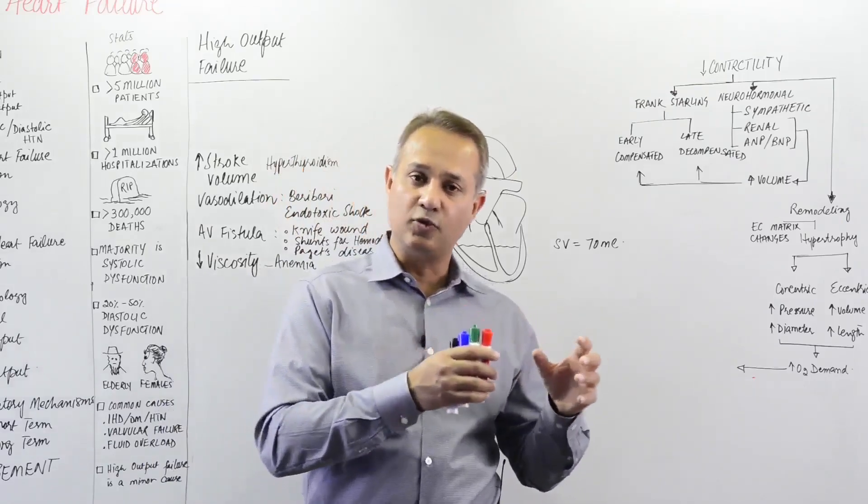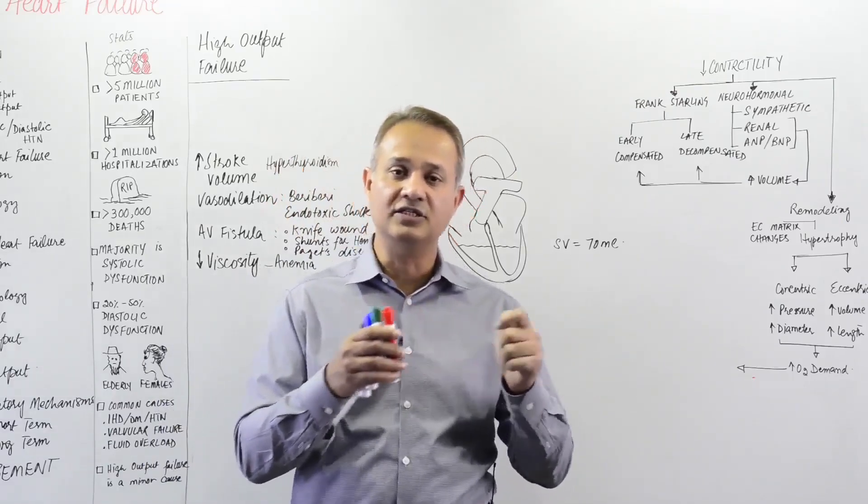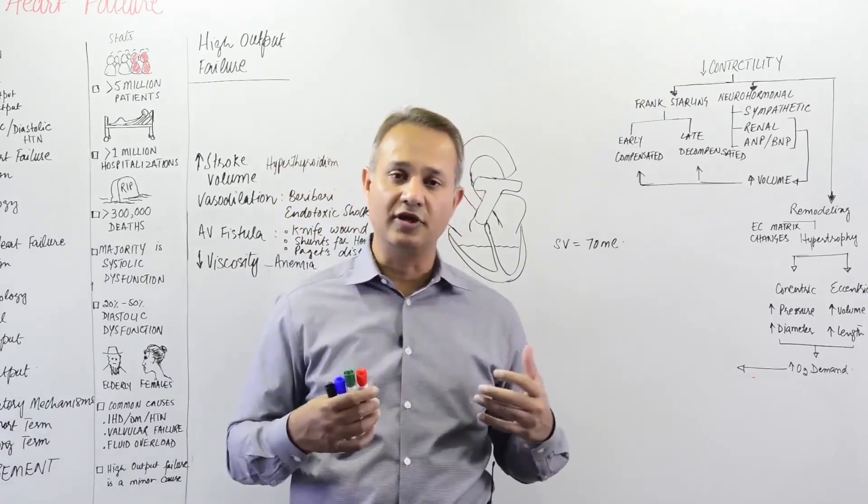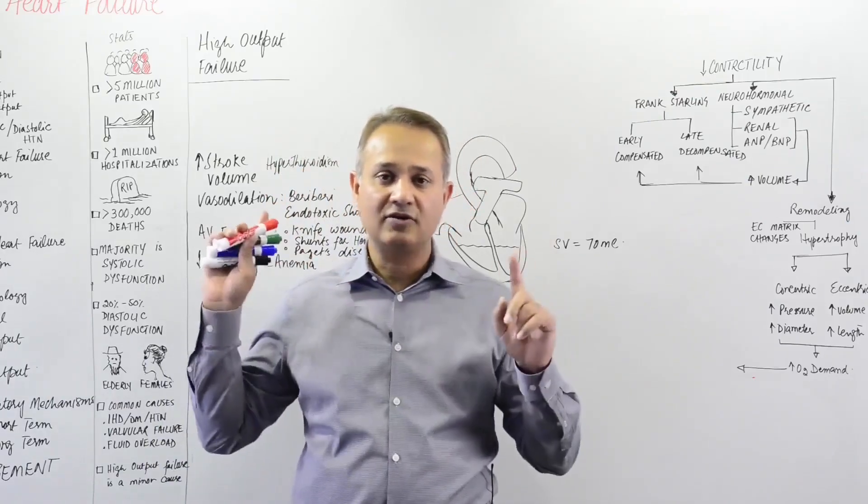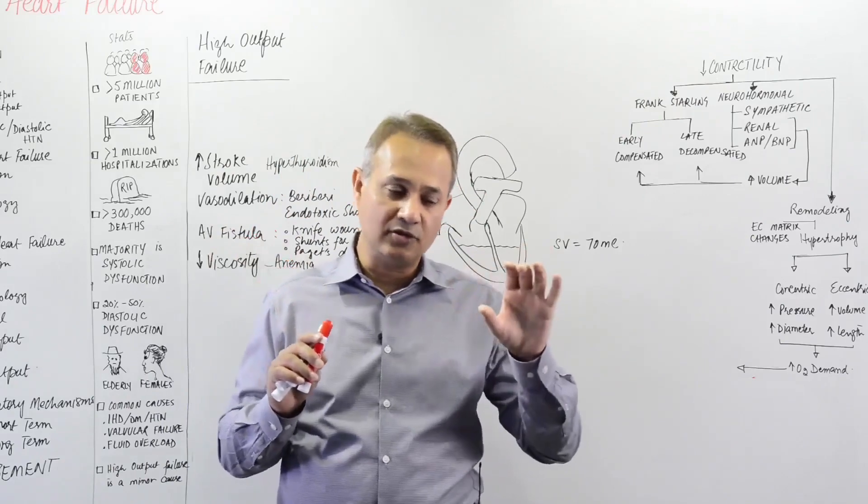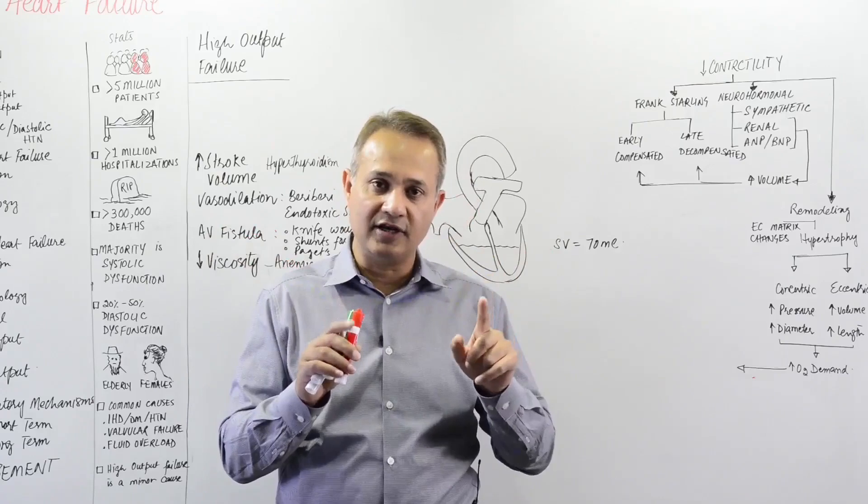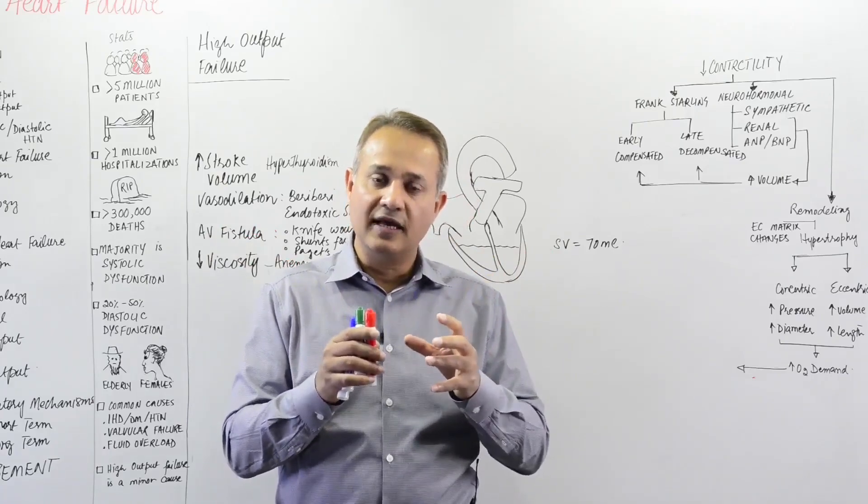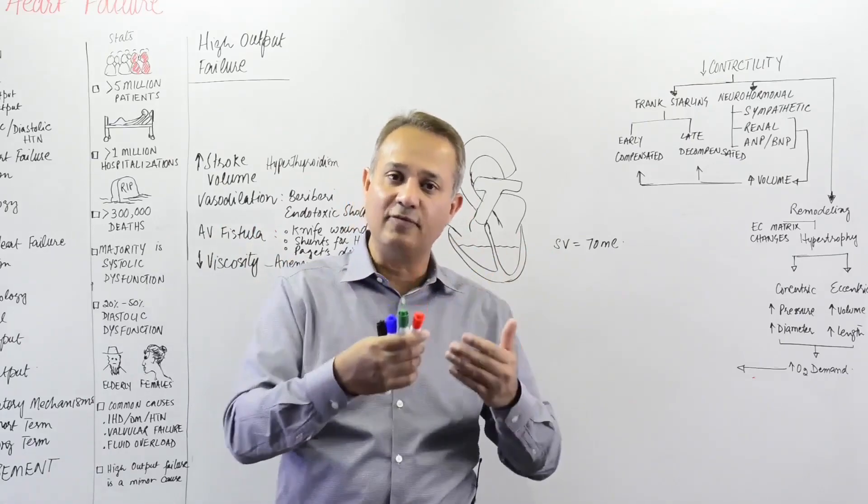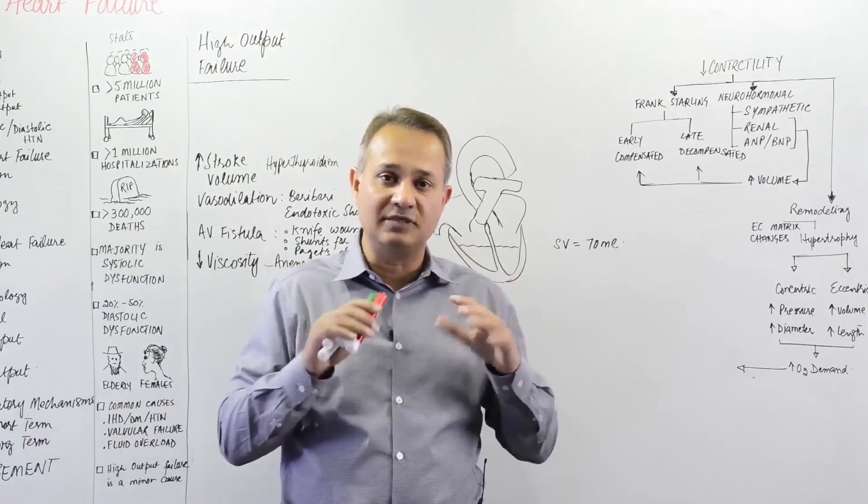In this particular case, the problem is slightly different compared to left and right heart failures. What is the problem in left and right heart failure? The heart is damaged somehow and so the heart cannot eject enough blood that is needed, and the tissue demand is normal.